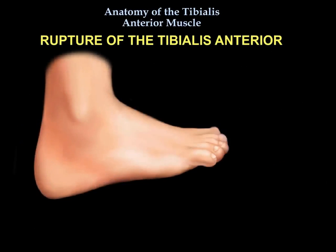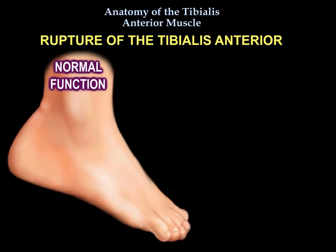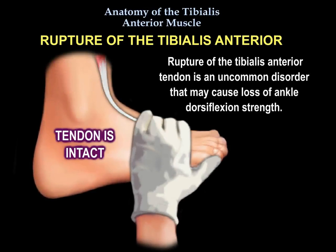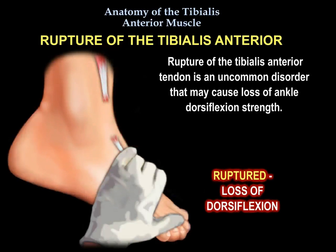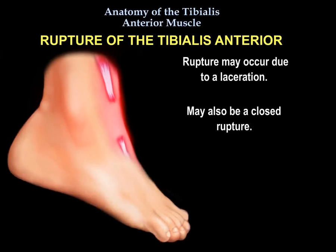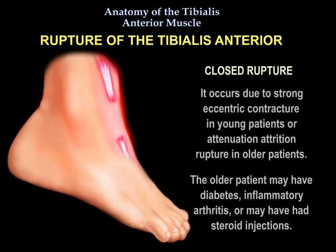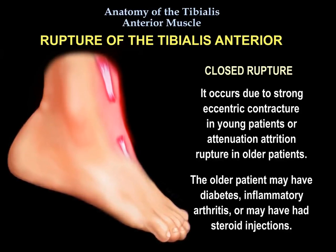Rupture of the tibialis anterior tendon is an uncommon disorder that may cause loss of ankle dorsiflexion strength. Rupture may occur due to laceration or may be a closed rupture. The closed rupture can occur due to strong eccentric contracture in young patients, or attrition rupture in older patients who may have diabetes, inflammatory arthritis, or prior steroid injections.